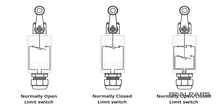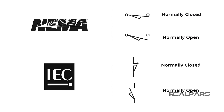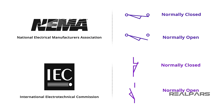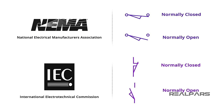Limit switches are available in several switch configurations: normally open, normally closed, or one of each. Depending on the origin of the electrical schematic, you may see limit switches drawn in different ways. The International Electro-Technical Commission or IEC and the National Electrical Manufacturers Association or NEMA have slightly different symbols.